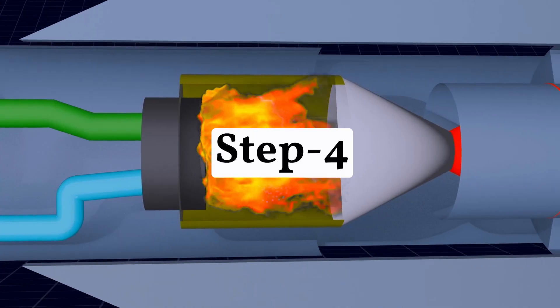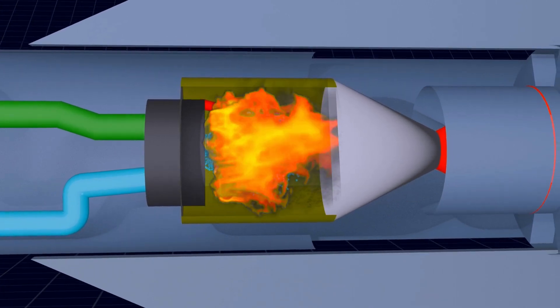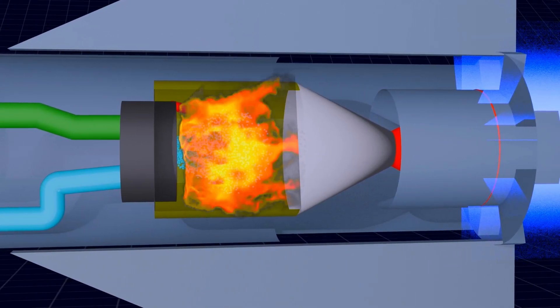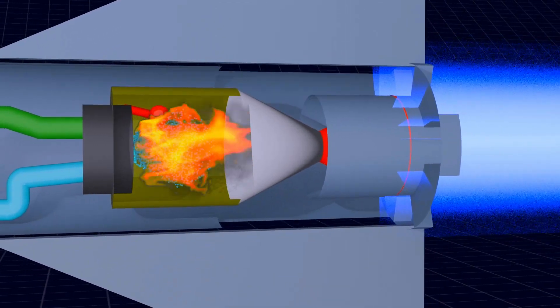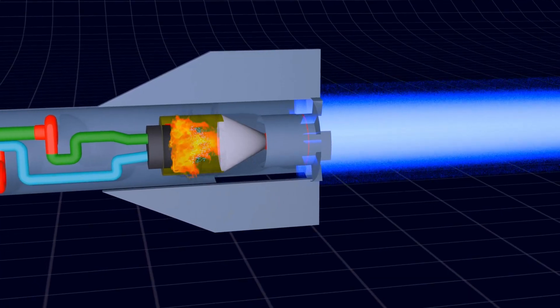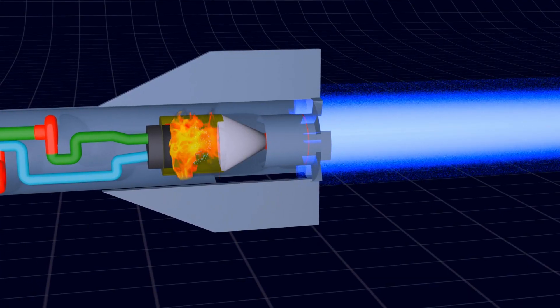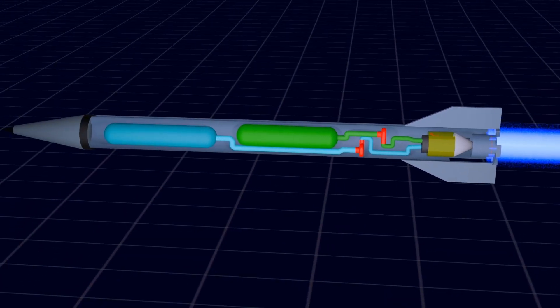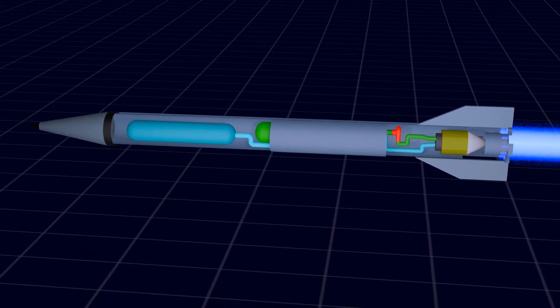Step 4: The high-pressure gas produced inside the combustion chamber rushes out at high speed through the nozzle. In other words, this gas becomes the thrust of the rocket. We all know Newton's third law of motion: Every action has an equal and opposite reaction.